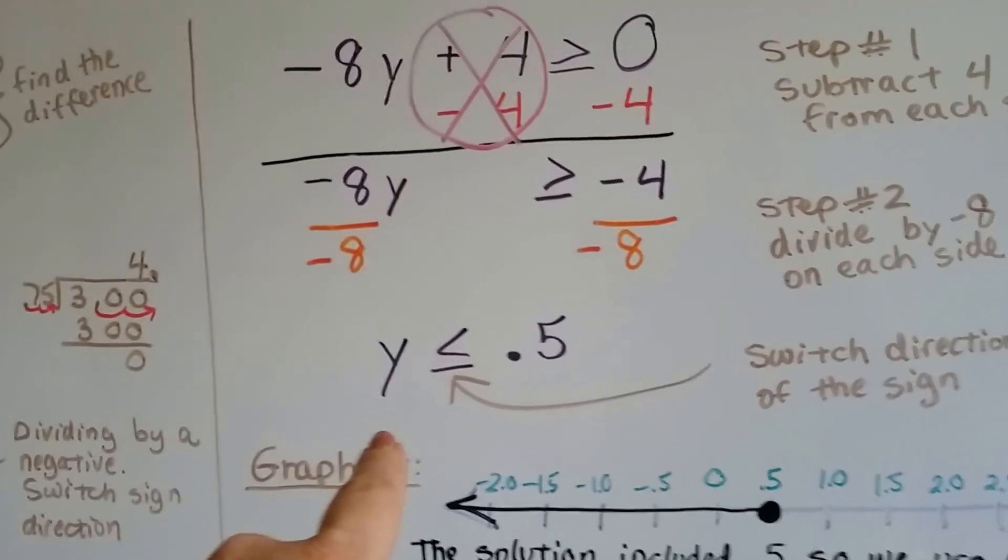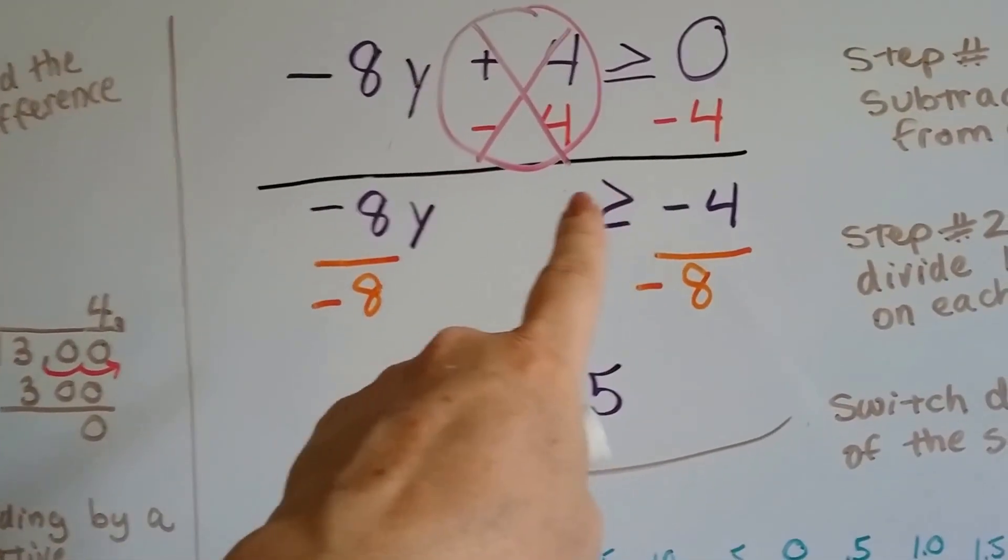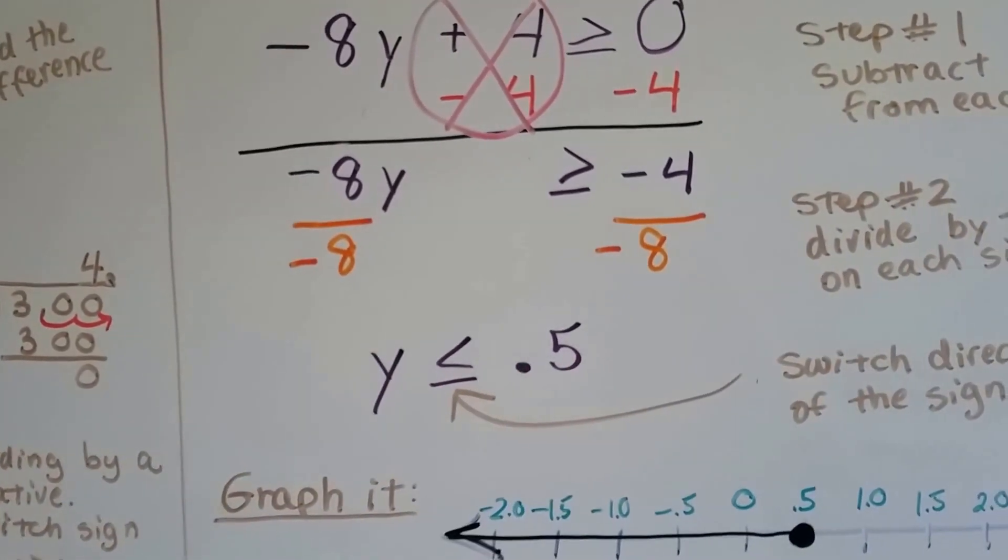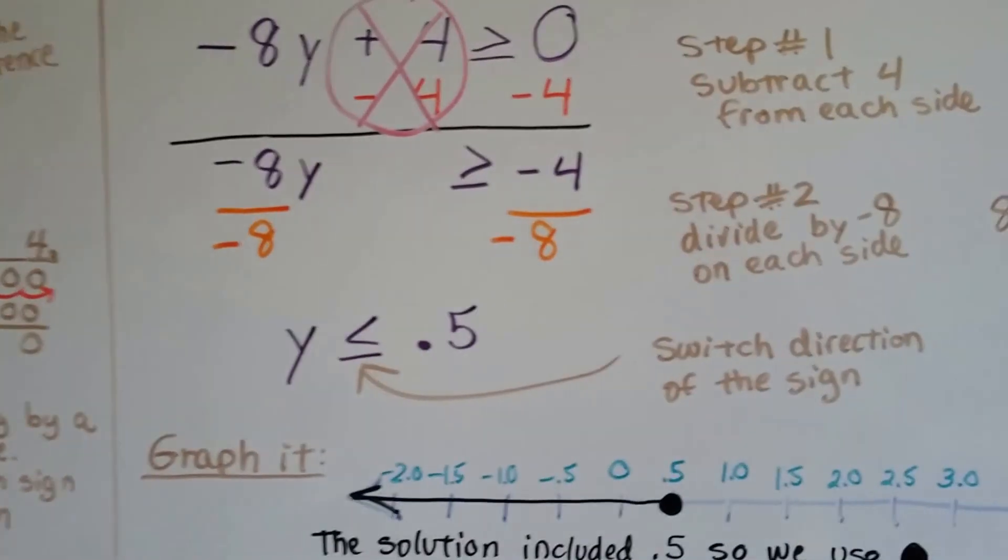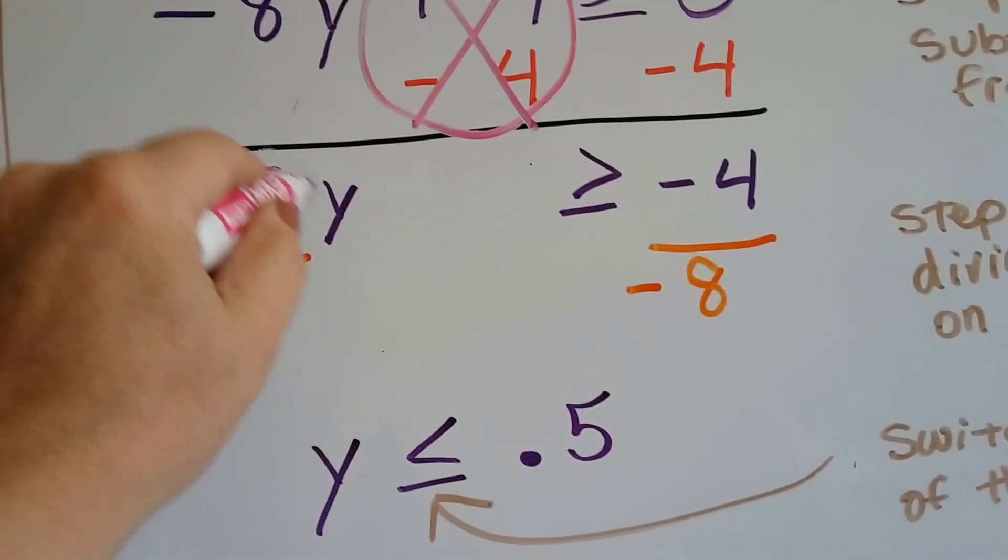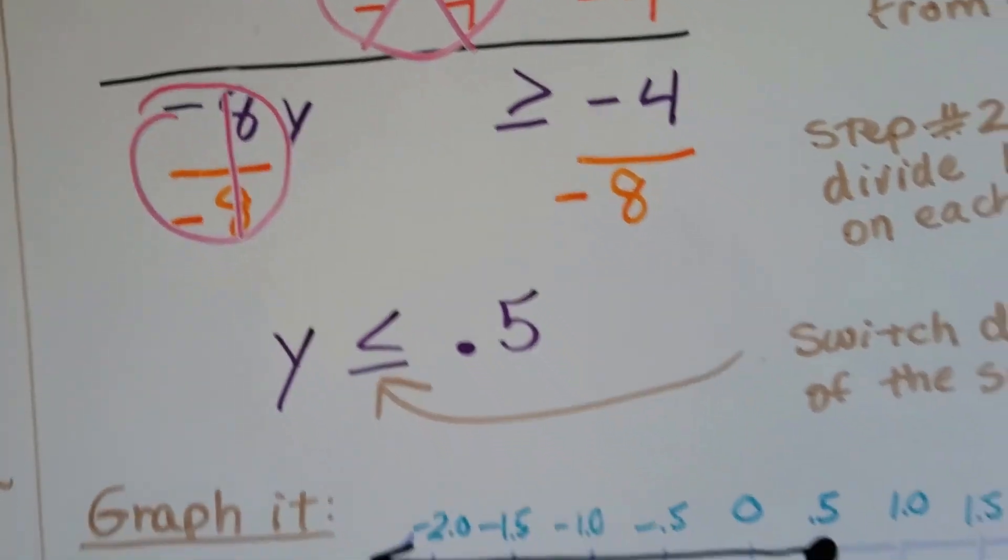Our next step is to divide both sides by the negative 8, and we do, and we get 0.5. So y, we switched the sign, it was open to the left, now it's open to the right. y is now less than or equal to 0.5. We switched the directions because we got rid of the negative here. We created a 1 because the numerator and denominator were the same.